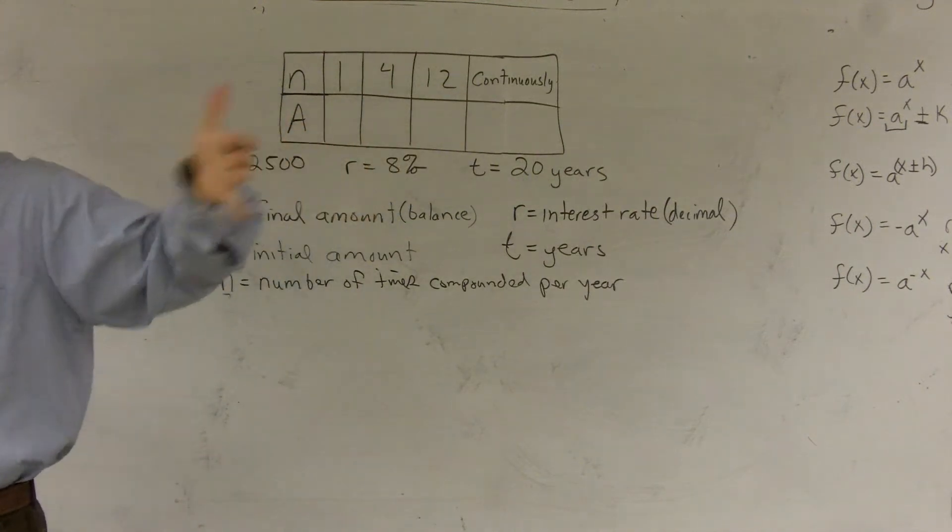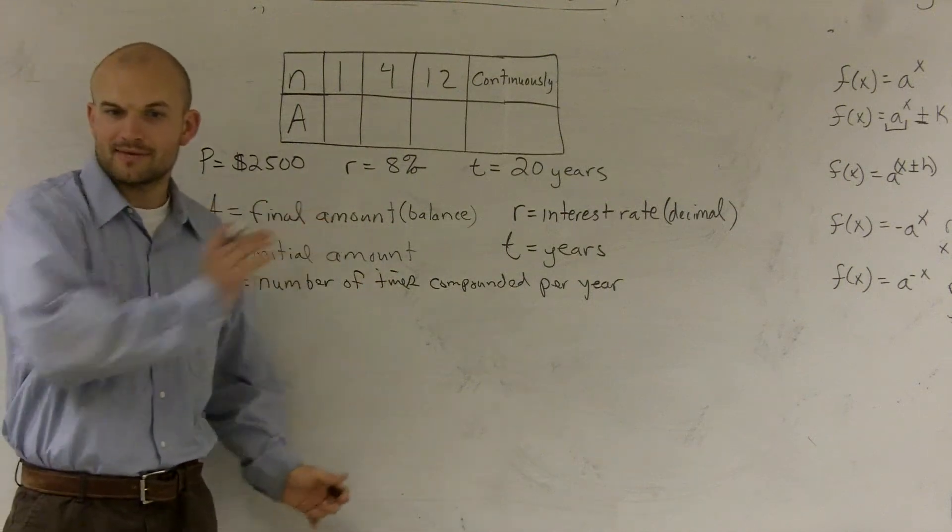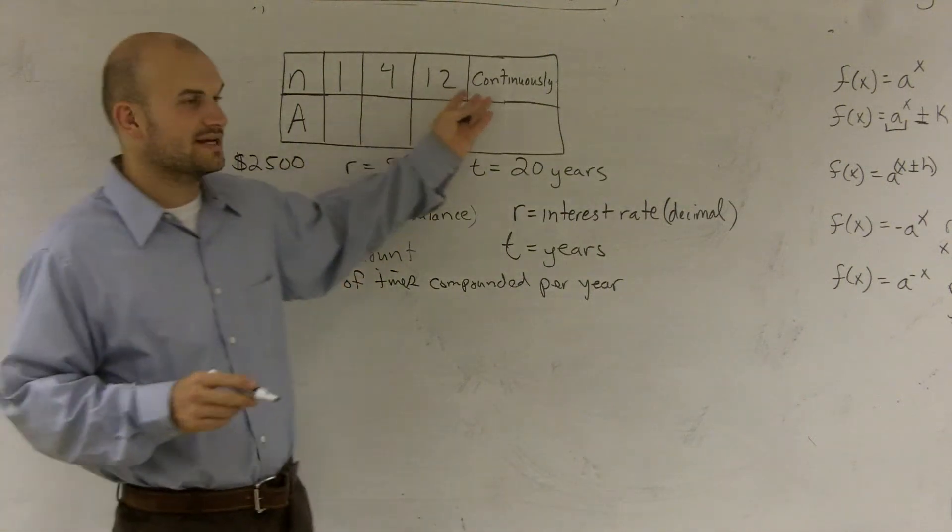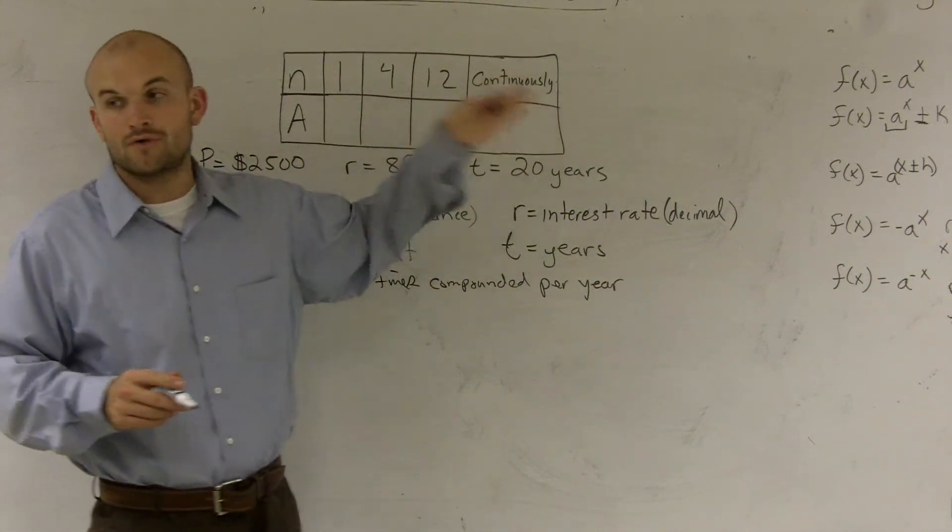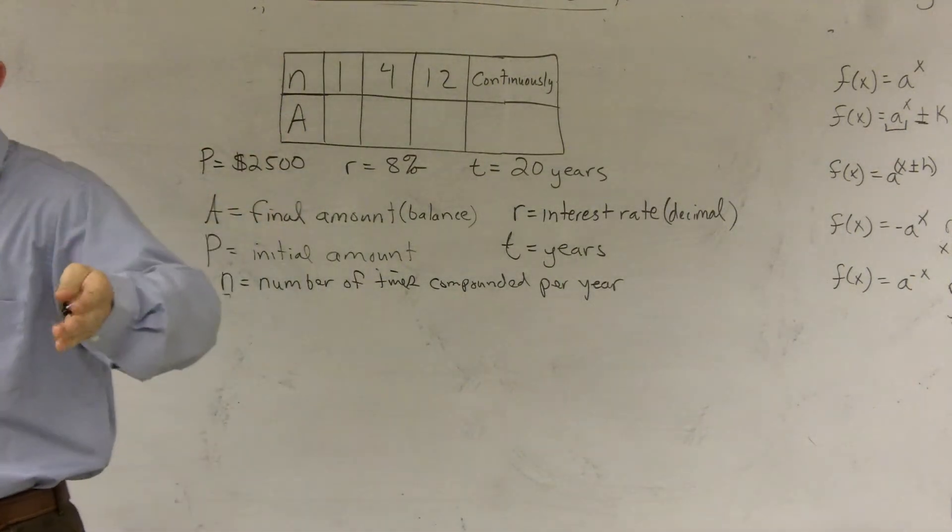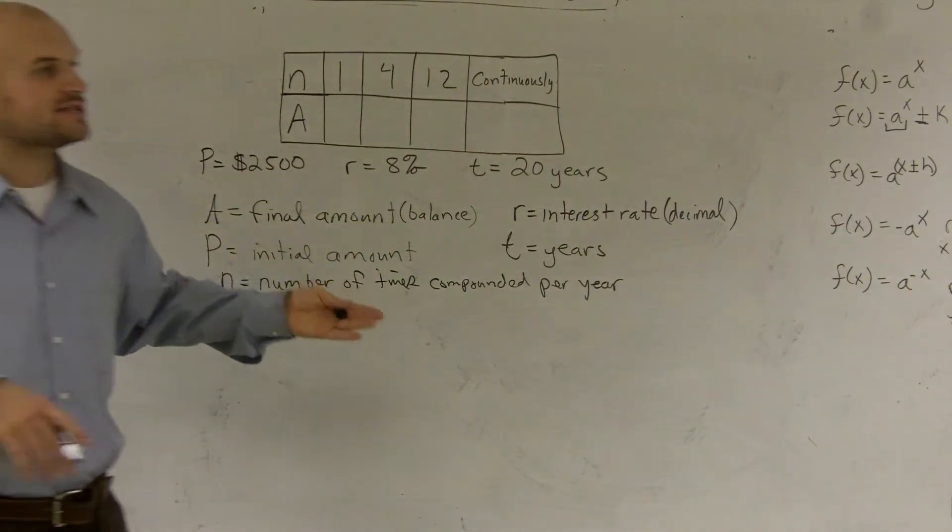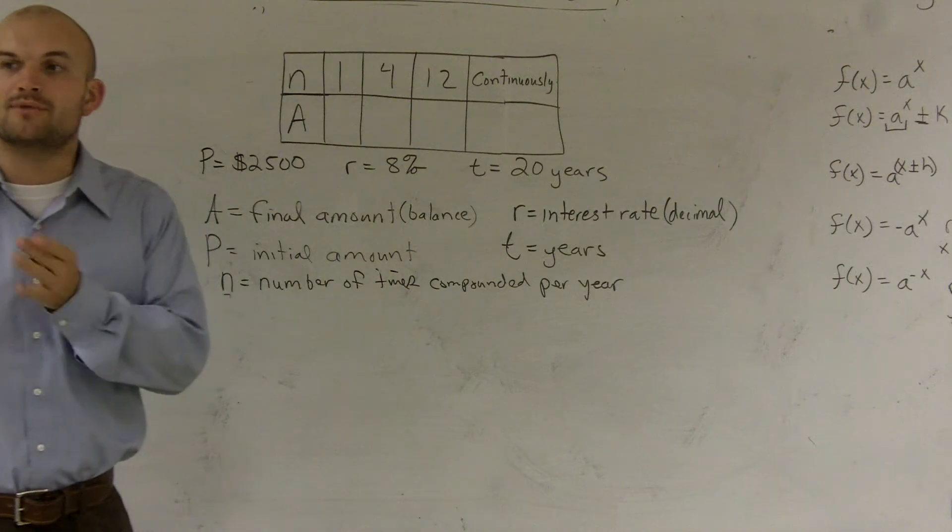Like every quarter, everything gets compounded. So therefore, quarterly would be four times per year. Monthly would be 12. So if I say, hey, I want something that's going to be compounded monthly, that would be 12. Weekly would be 52. And daily would be 365.